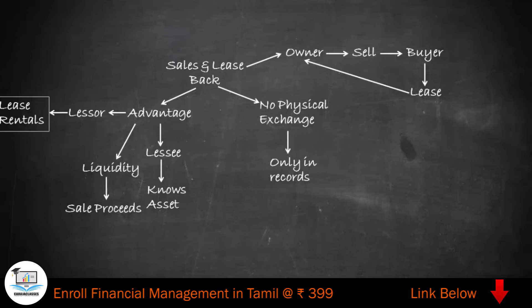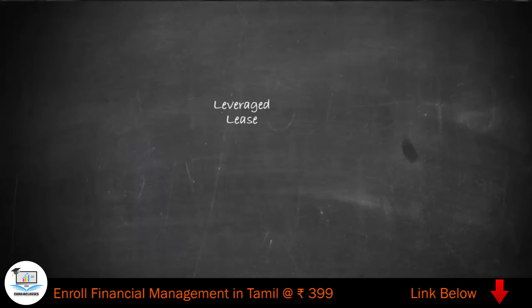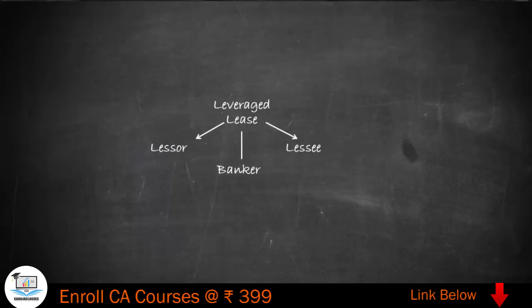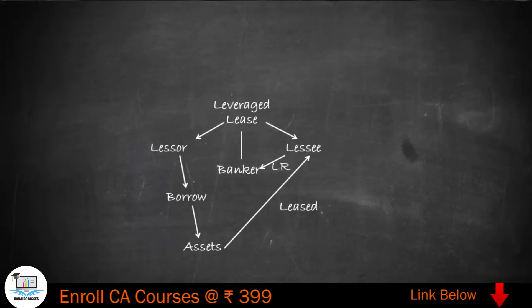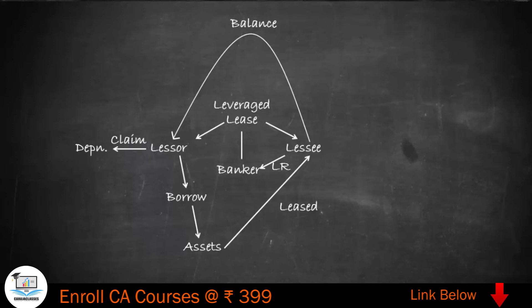Especially for the lessee when he needs to raise funds or improve his liquidity position. The second type of lease is the leverage lease. In this lease, apart from the lessor and lessee, there is a third party called the banker. The lessor will borrow from the banker to create the asset, which is then leased to the lessee. The lessee will pay lease rentals directly to the banker, and if any balance is left, it is paid to the lessor. The lessor will have a claim on depreciation for income tax purposes.